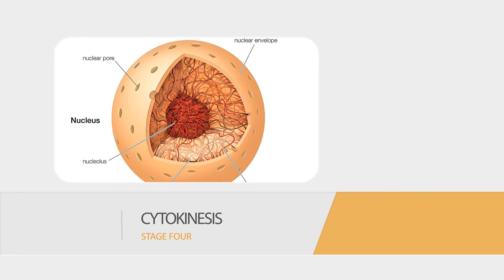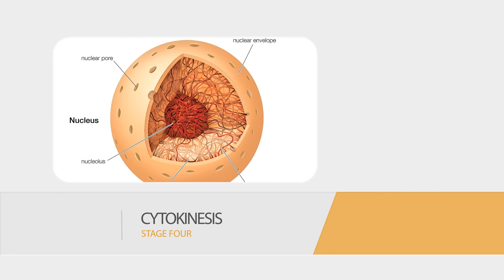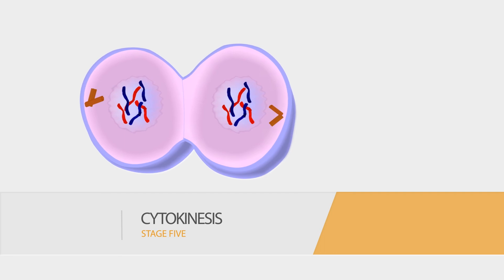Stage 4. A nuclear membrane forms around each set of single chromosomes. The cell begins to divide into two cells. Stage 5. Two cells form. Each cell has a nucleus containing an identical set of chromosomes.